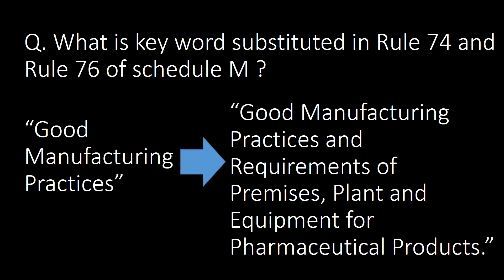What keyword is substituted in Rule 74 and Rule 76 of Schedule M? The keyword is Good Manufacturing Practices. With the revision of Schedule M, it is now Good Manufacturing Practices and Requirements of Premises, Plant and Equipment for Pharmaceutical Products.